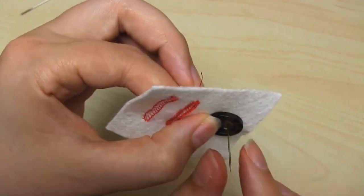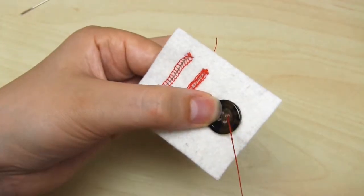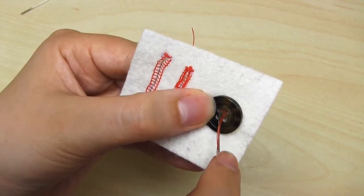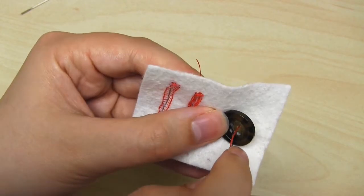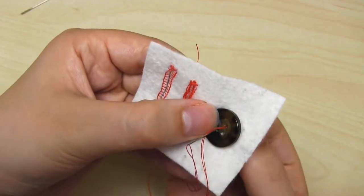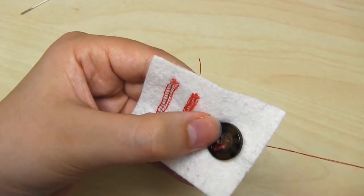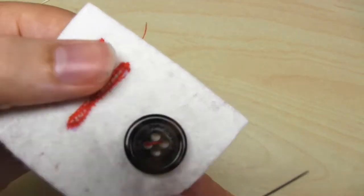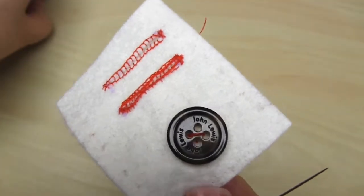I prefer to come up through the holes on the right, and then go down through the holes on the left, but the order is completely up to you. So I bring my needle up through the top right hole first, and then down through the bottom left hole. Continue to try and keep the holes in the button lined up with the cross underneath.